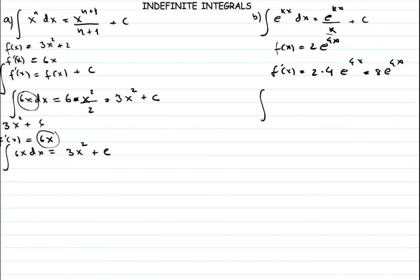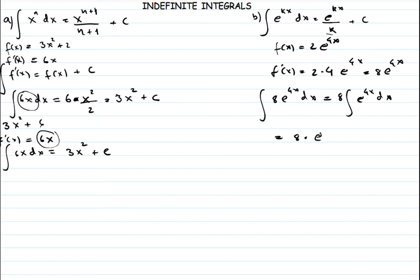If you want to find the indefinite integral of 8e raised to 4x dx, 8 is a constant so you take it out and you have the integral of e raised to 4x dx. Apply the rule: instead of multiplying by 4 as we did for the derivative, in integration we divide by 4. So we get 8 times e raised to 4x divided by 4. Since 8 divided by 4 equals 2, we get 2e raised to 4x plus c.